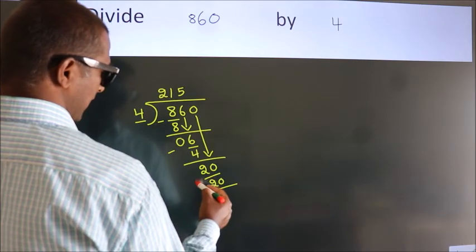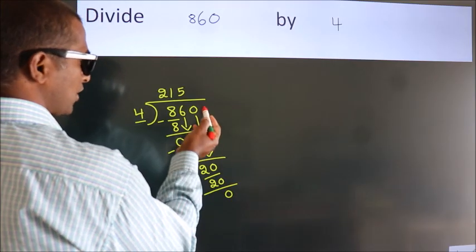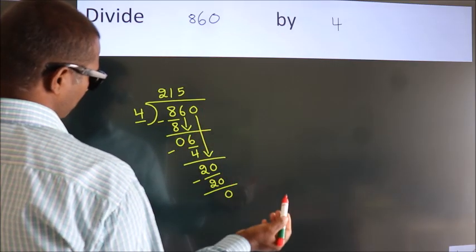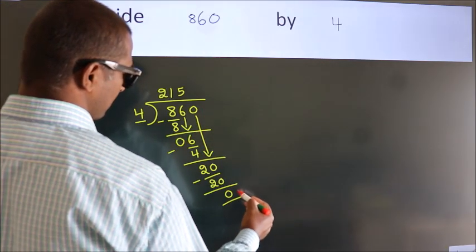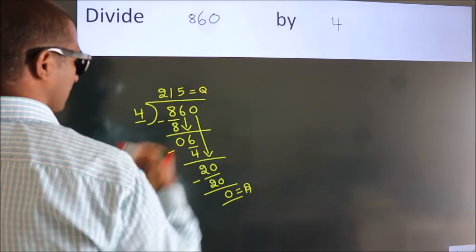Now we subtract. We get 0. After this, no more numbers to bring down, so we stop here. This is our remainder, this is our quotient. Thank you.